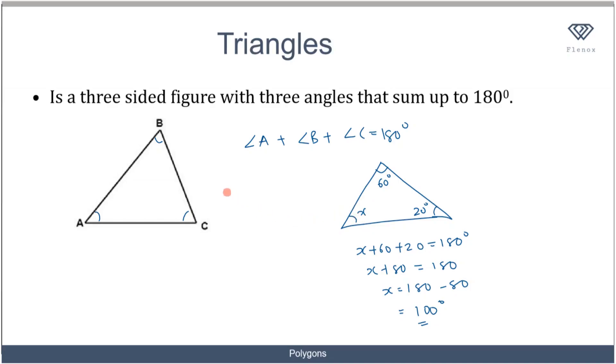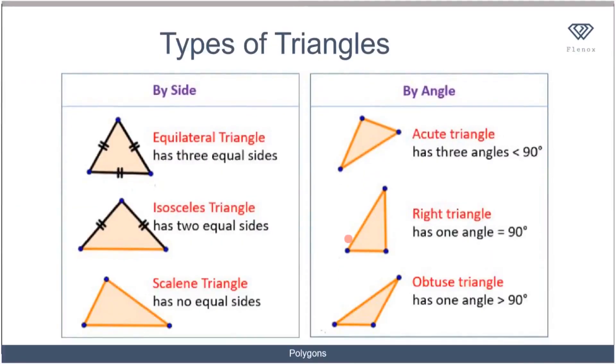To recap, the sum of all angles in a triangle must equal 180 degrees. Now let's talk about the types of triangles.